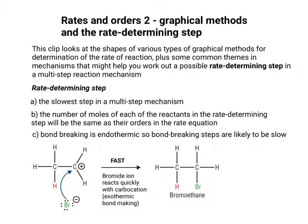The examples you'll come across will require you to work out a possible rate-determining step or a possible multi-step mechanism given some information. It's quite difficult to go through all the different permutations in a single video clip, so being able to deduce this in a natural example requires practising them first. What I've hopefully done is given you a few pointers of things that are common to all rate-determining steps.